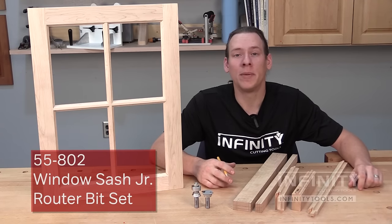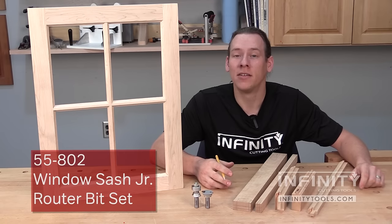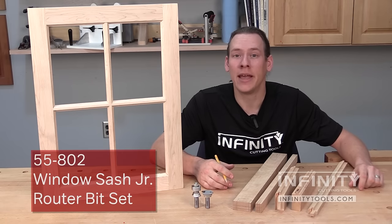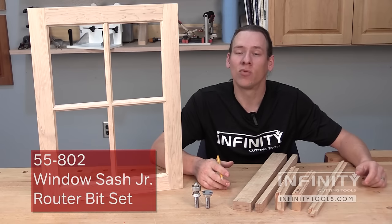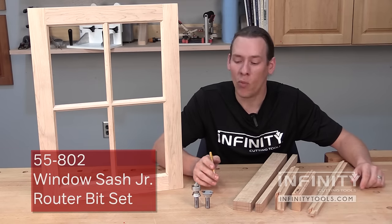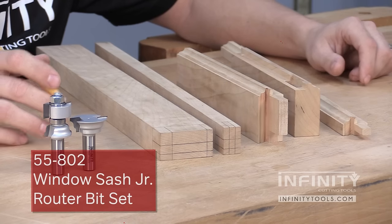We've had a lot of customers ask us if it would be possible to make a router bit set to allow window sash to be made ranging in thickness from one and one eighth of an inch to one and a quarter inches thick. That's why we decided to make the Window Sash Junior Router Bit Set.